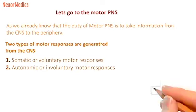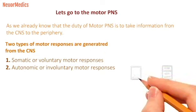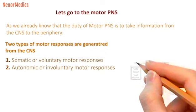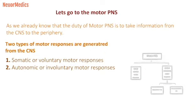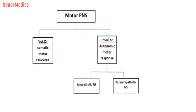Here is the diagrammatic representation of the motor peripheral nervous system. As we already know, the motor peripheral nervous system is divided into two components: voluntary or somatic motor responses, and involuntary or autonomic motor responses.